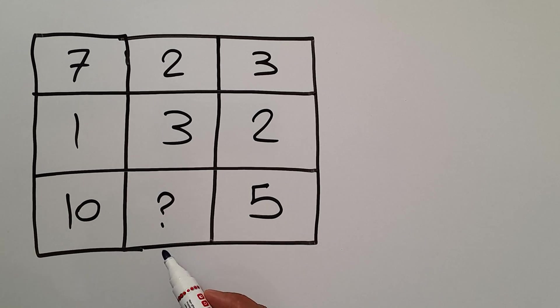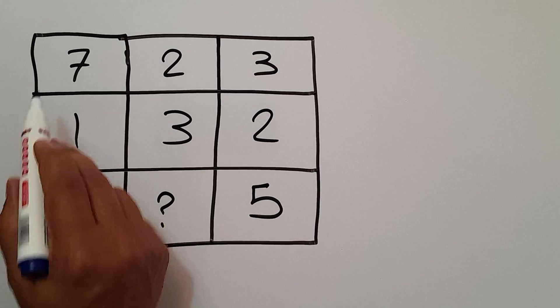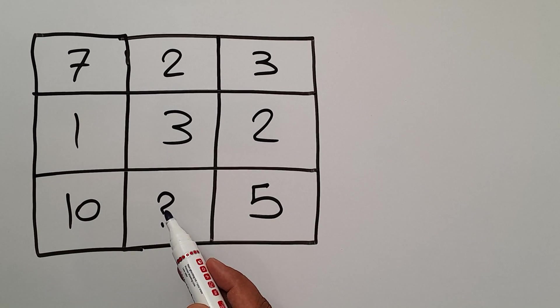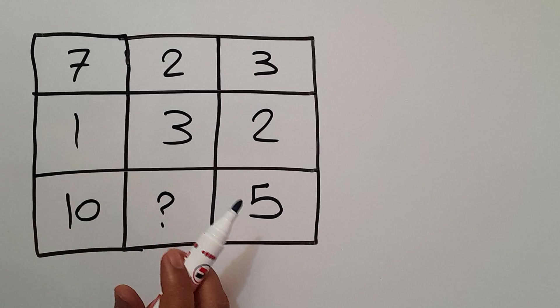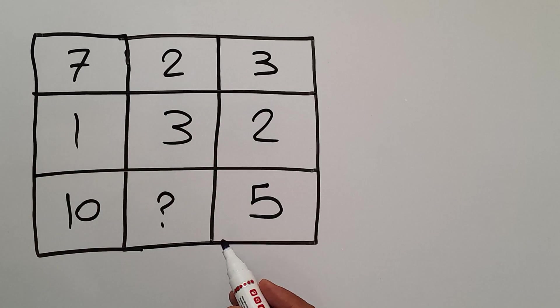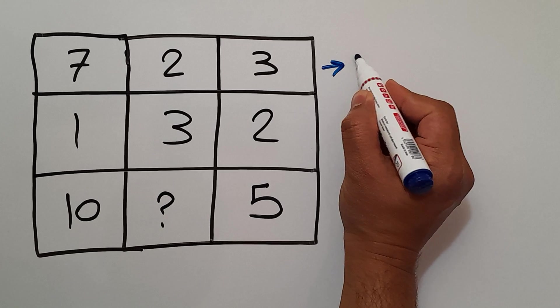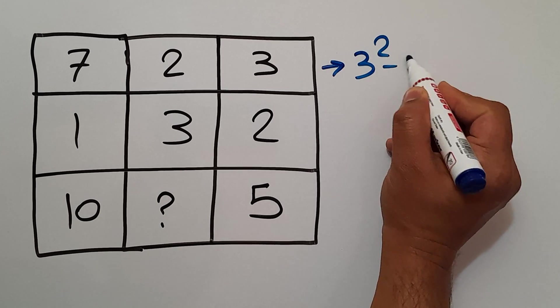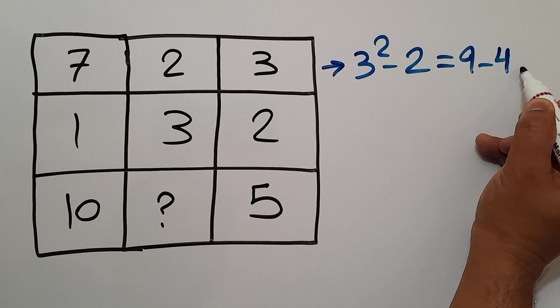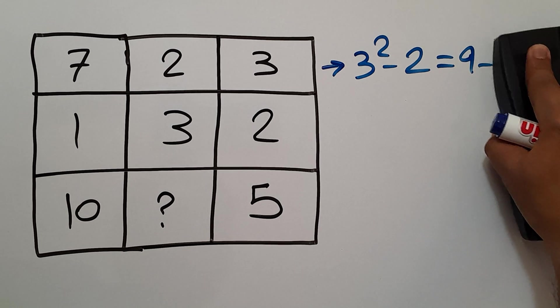Are you ready to solve? Let's go. In each row we have three numbers, and we need to find the relationship between these three numbers. In the first row we have 7, 2, and 3. Okay, 3 squared minus 2 gives us 9 minus 2, which equals 7, the first number.